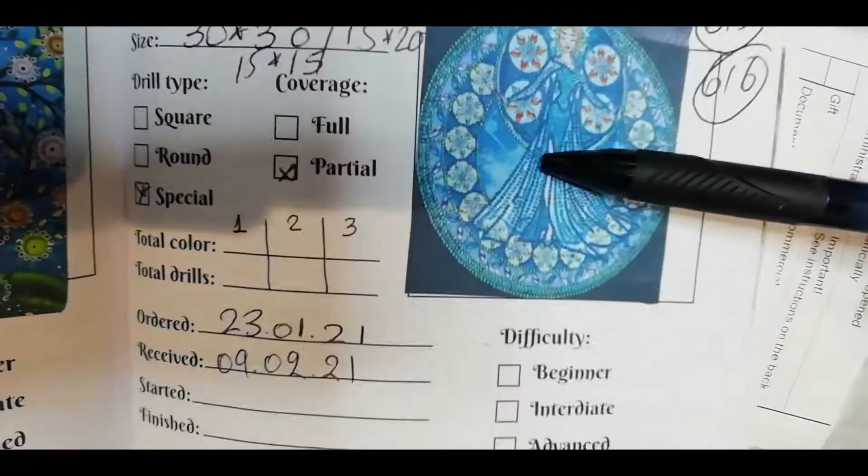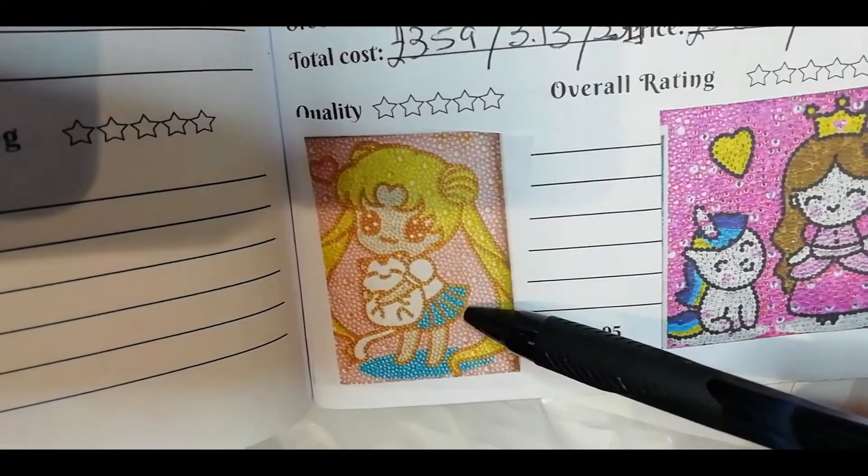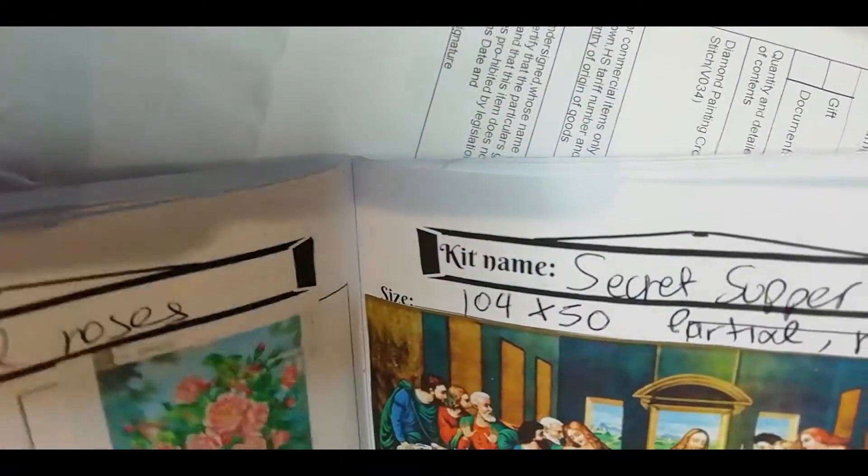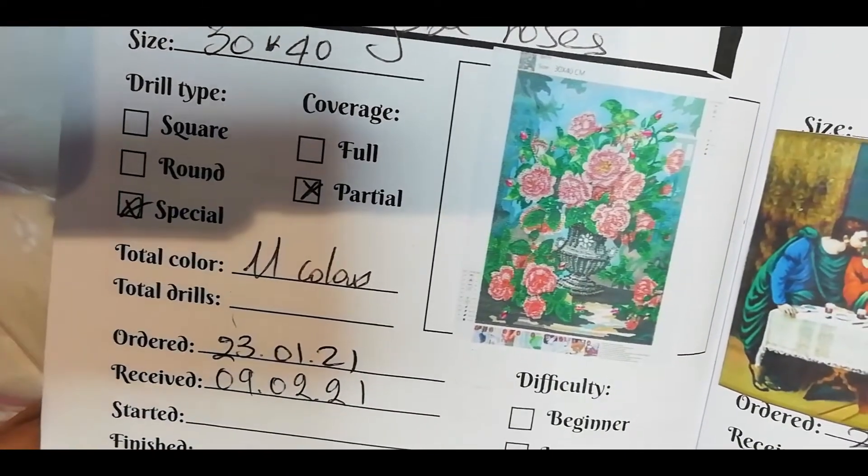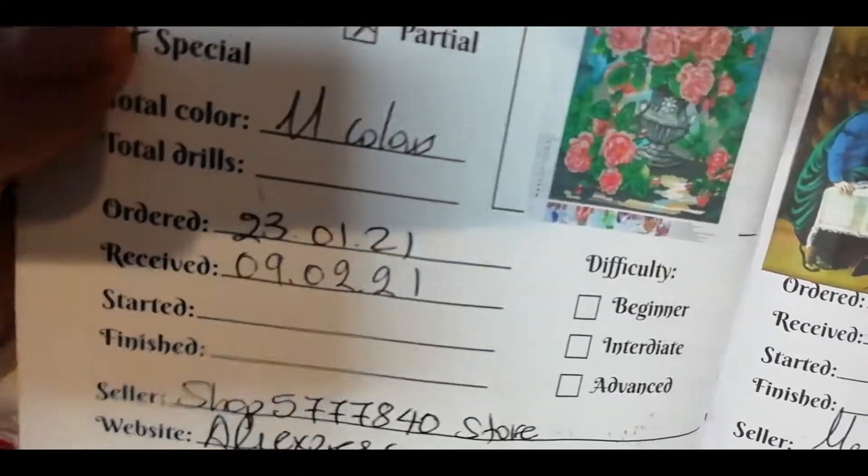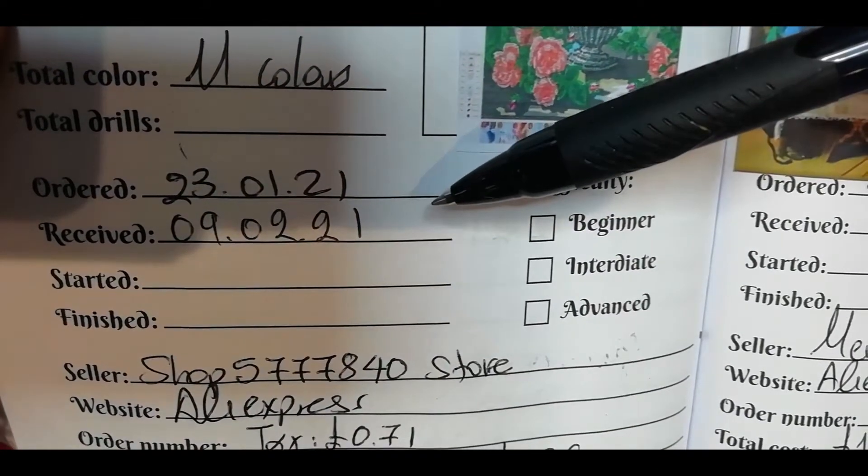We also have Elsa and two little girls. This one reminds me of Sailor Moon, and we have this with roses. I ordered all these on the 23rd of January, they arrived on the 9th of February 2021.